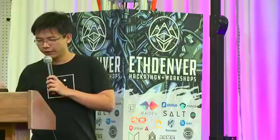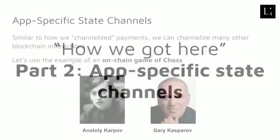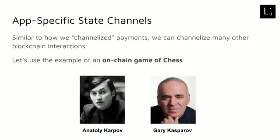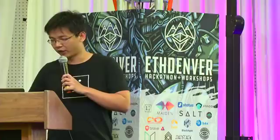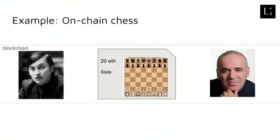Now let's move on to what we call application-specific state channels. The idea here is that similar to how we channelized payments, we can use a really similar technique to channelize many other blockchain interactions. I'm going to use the example of chess, and our players are going to be Karpov and Kasparov. First I'm going to go through the example of an on-chain game of chess, and then an example of an off-chain game of chess. In an on-chain game of chess, we have a contract holding 20 ETH — so whoever wins this game gets 20 ETH — and the contract also has the state of the chessboard in its storage.